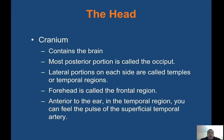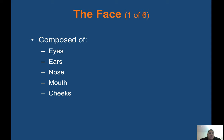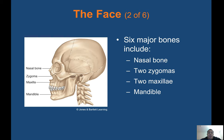The head — the cranium — consists of the brain. The most posterior portion is called the occiput. Lateral portions on each side are called temples or temporal regions. Forward is called the frontal region, anterior to the ear and the temporal region. You could feel the pulse of the superficial temporal artery. The face is composed of eyes, ears, nose, mouth, and cheeks. Six major bones include the nasal bone, two zygomas, two maxilla, and mandible.